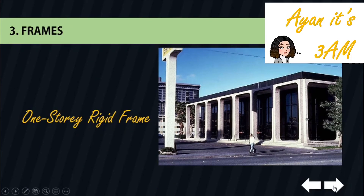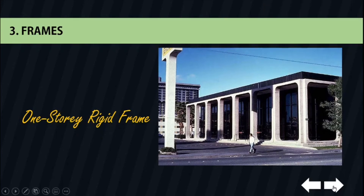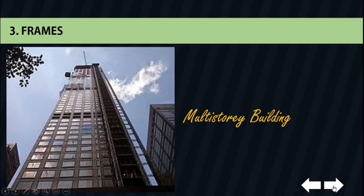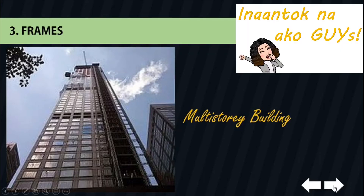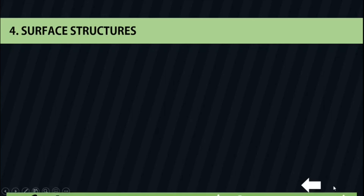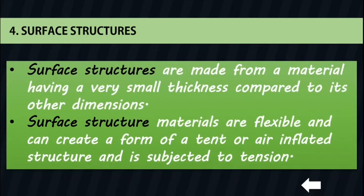The second sample is our multi-story building, the First City National Bank building in Houston, Texas — a concrete-covered steel frame multi-story building with three bays and nine bays in plan. Our last on the list is surface structures. Surface structures are made from a material having a very small thickness compared to its other dimensions.